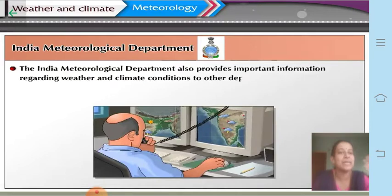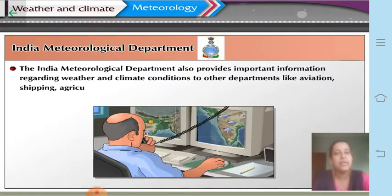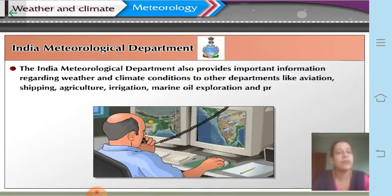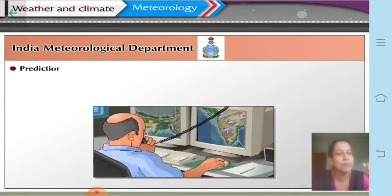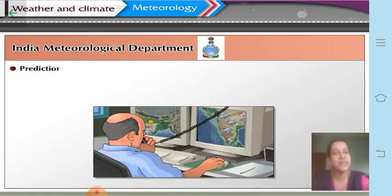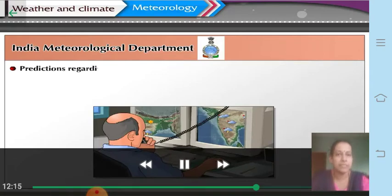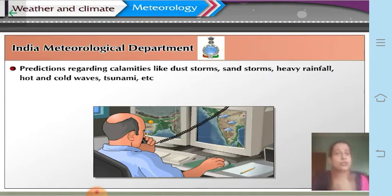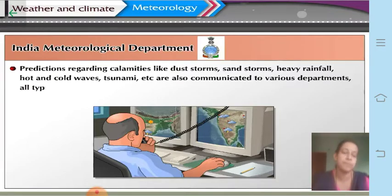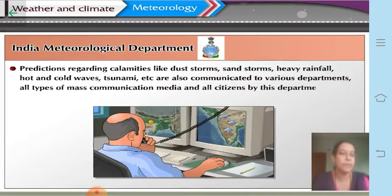The Indian Meteorological Department provides important information regarding weather and climatic conditions to departments like aviation, shipping, agriculture, irrigation, marine oil exploration and production. For aviation especially, it is very necessary to know the weather conditions, as flights may be delayed otherwise. Predictions regarding calamities like dust storms, sandstorms, heavy rainfall, cyclones, hot and cold waves, and tsunamis are communicated to various departments and the public.